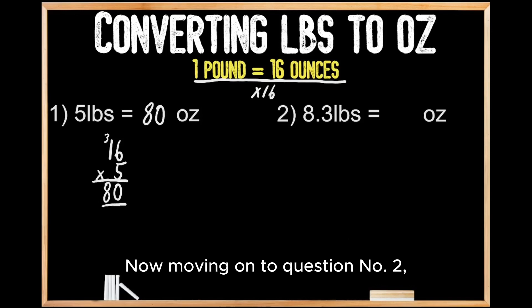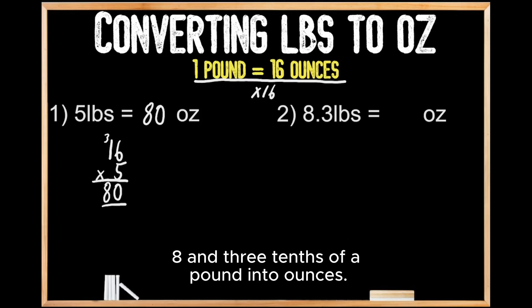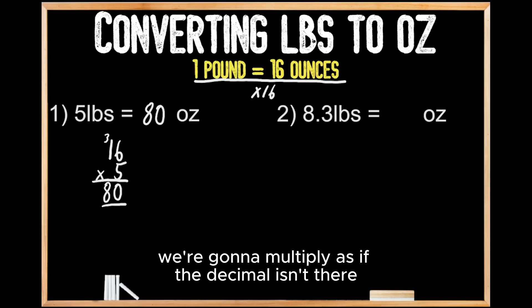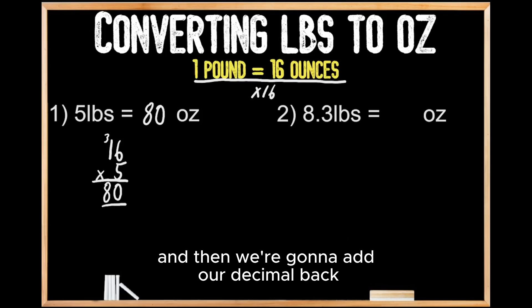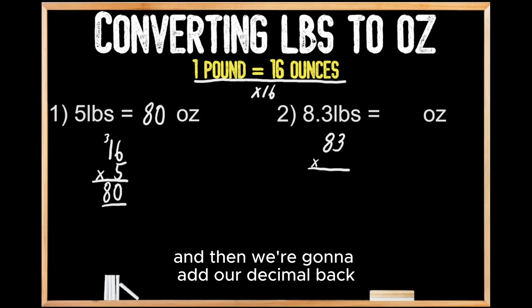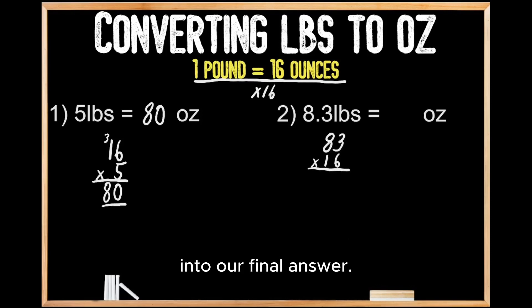Now moving on to question number two, where this time we're being asked to convert eight and three-tenths of a pound into ounces. In order to convert these pounds into ounces, we're going to multiply as if the decimal isn't there, and then we're going to add our decimal back into our answer later. So we're going to multiply 83 times 16, and then add our decimal back into our final answer.